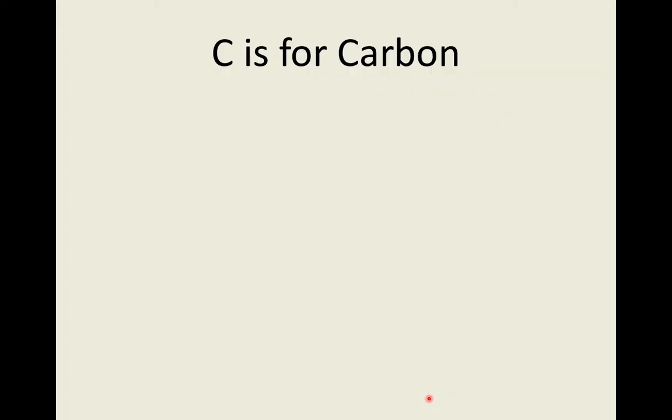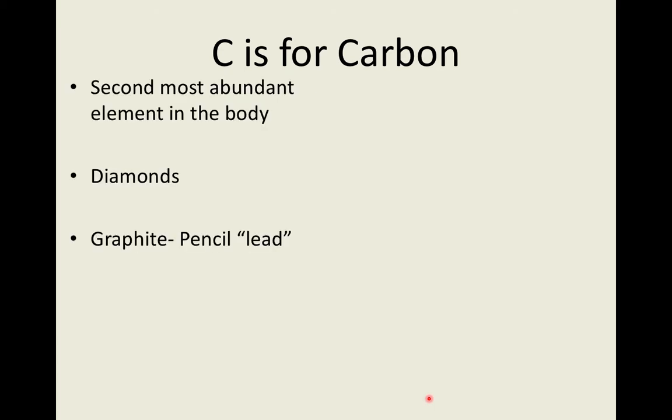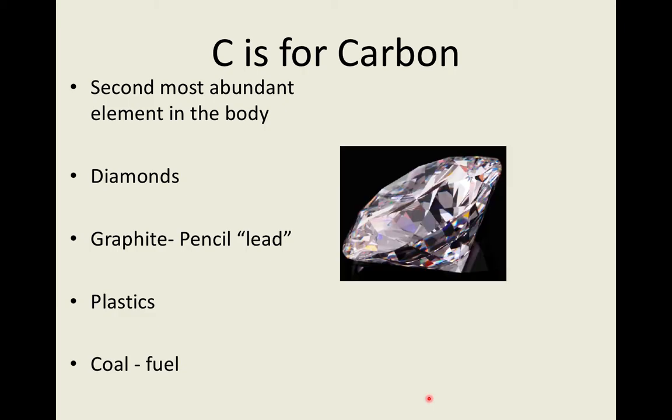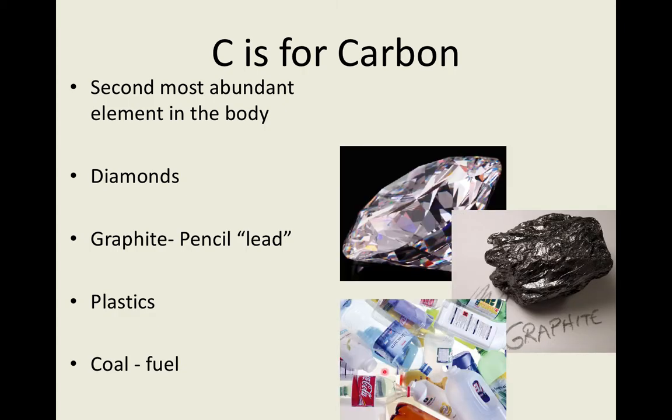Just a quick run through for what these elements are. The most common ones is carbon. Carbon is the most abundant element in the body. That's carbon. That's what diamonds are made of. That's what graphite is made of. Plastics or coal and fuel. All of those are carbon.